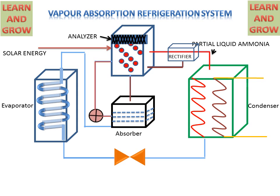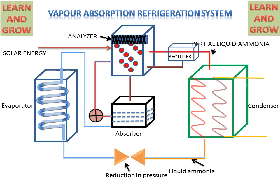This partially liquid Ammonia goes to the Condenser and is converted into fully liquid form. This liquid Ammonia then passes through the Expansion Valve, where pressure and temperature are reduced. It then reaches the Evaporator, where it absorbs the heat of the space and converts into low-pressure vapor. This low-pressure vapor then goes to the Absorber. Through the Evaporator, the space that we want to cool is cooled.